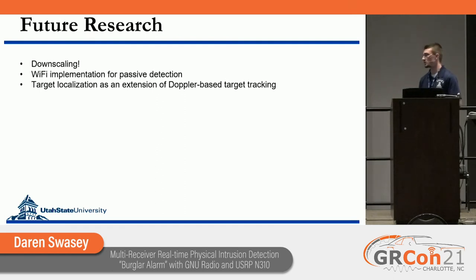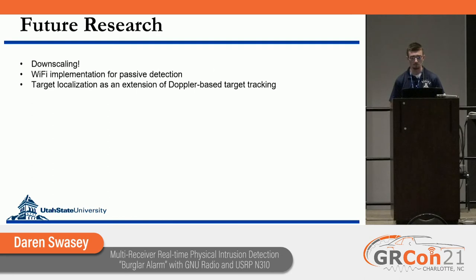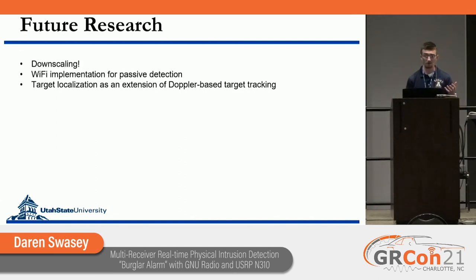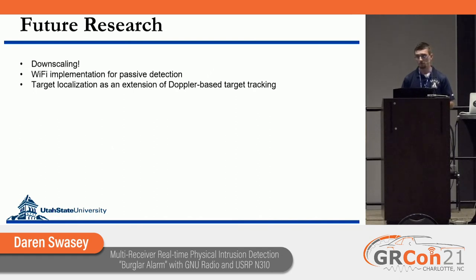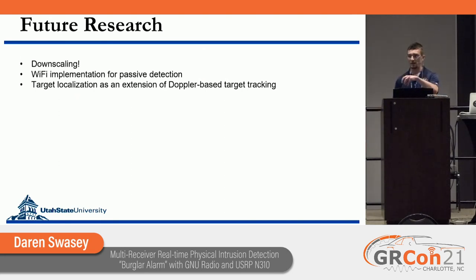There's still a lot to do with this. In the future we can downscale — taking this from the N310 down to something like an RTL-SDR, since we don't need that much power. The sample rate used was about 2048 Hz, so it doesn't need a lot to run well. The next goal is to implement this with Wi-Fi and not have to transmit anything, because being able to passively do that would be more beneficial and a potential application for in-home use. As a follow-up, this can also lead to target localization — if you detect the intruder and use some of the positional data, you can then use what Dr. Moon will talk about to follow them.